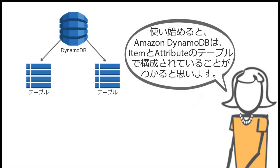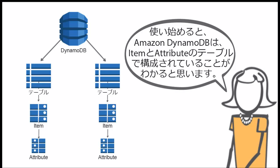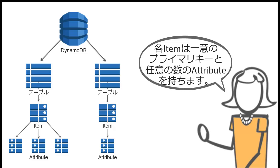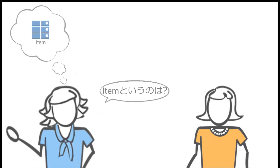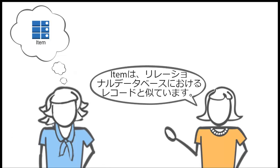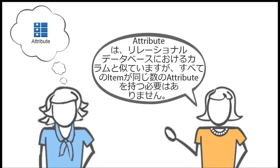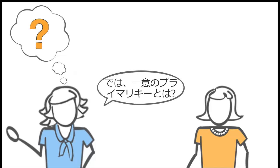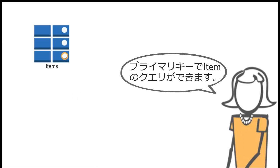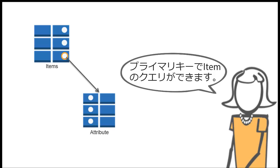As you get started, you'll see that Amazon DynamoDB consists of tables with items and attributes. Each item has a unique primary key and any number of attributes. What's an item? An item is similar to a row in relational databases. What's an attribute? It's similar to a column in relational databases, but not all items need to have the same number of attributes. And what's the unique primary key? You can query items by their primary key.